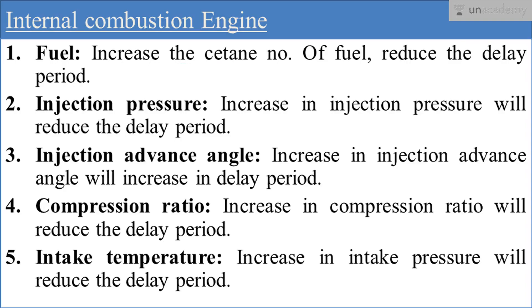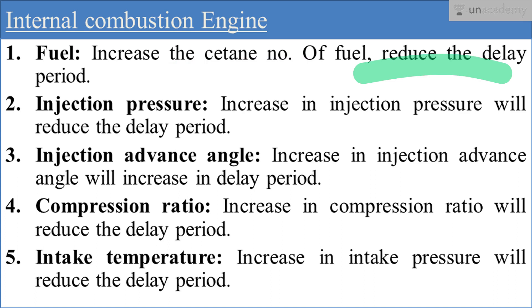Let's start with fuel. The fuel used in compression ignition engine is diesel. For the diesel engine we generally consider the cetane number. If the cetane number of the fuel is increased, it will reduce the delay period and also cause smoother engine operation. The cetane number depends upon the chemical composition of the fuel.